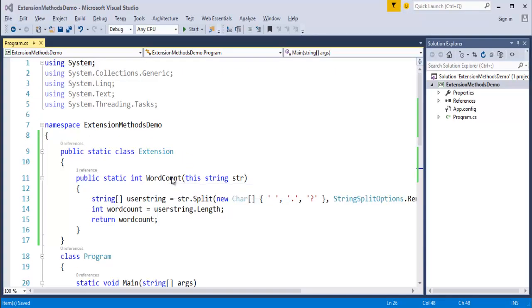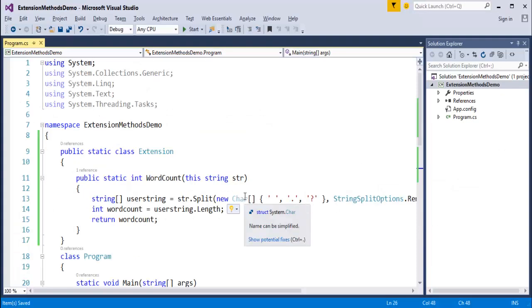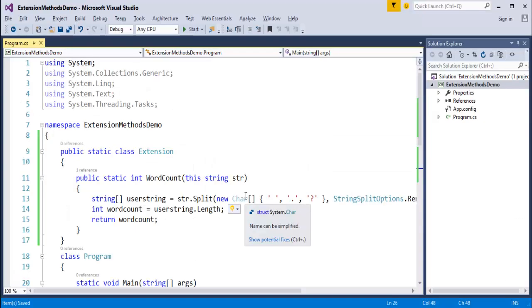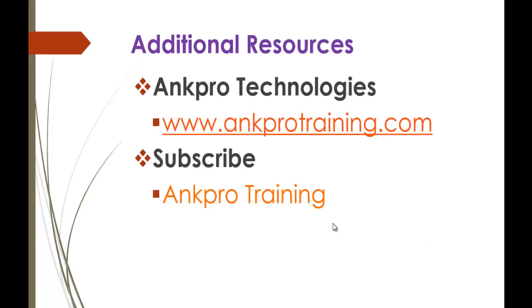You can give any name to the extension method class. For this method I gave the name WordCount, but you can name it whatever you want. Also, if you create extension methods that have the same signature as an existing method — for example, ToUpper, which is already present in the .NET framework — then that extension method will never be called, or it will throw a compile error. This is what about the features and properties of extension methods. Thank you for listening, have a great day, and please subscribe to Ancro Training.